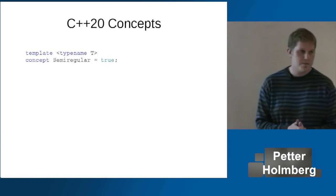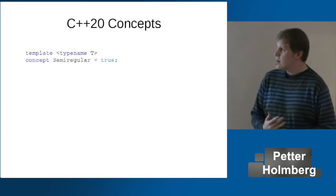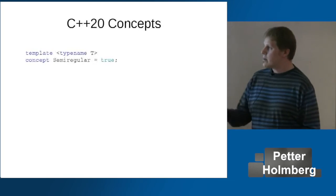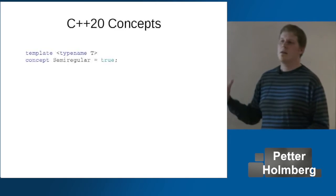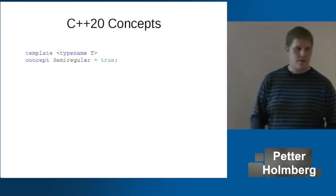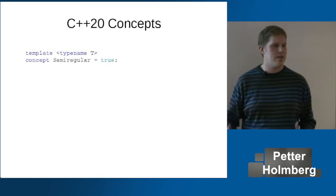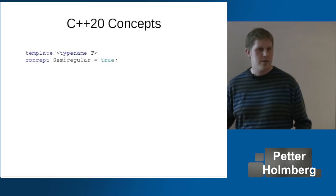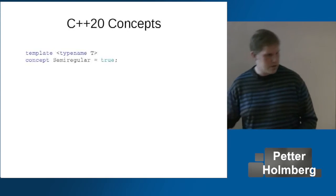Here's a new syntax in the draft standard. You define a concept like a template, followed by the new keyword `concept` to make it a concept, followed by the name, equals, and then a boolean expression. This boolean expression can be almost as complex as you like, but it has to be possible to evaluate at compile time. So this whole thing is a compile-time predicate used to test whether a type satisfies the concept you described.